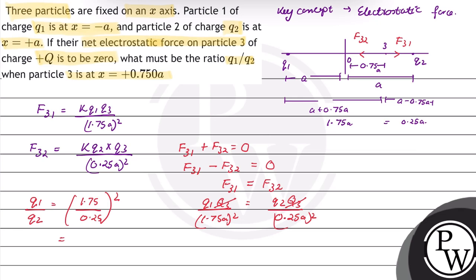So, the ratio Q1 upon Q2 will be equal to 49. The ratio Q1 upon Q2 is equal to 49, for which the net electrostatic force on particle 3 will be 0. Hope you understood it well. Best of luck.